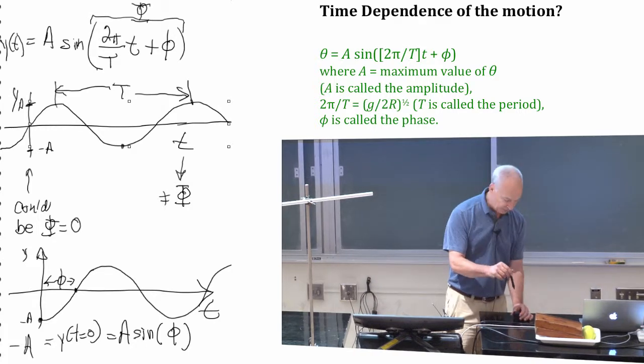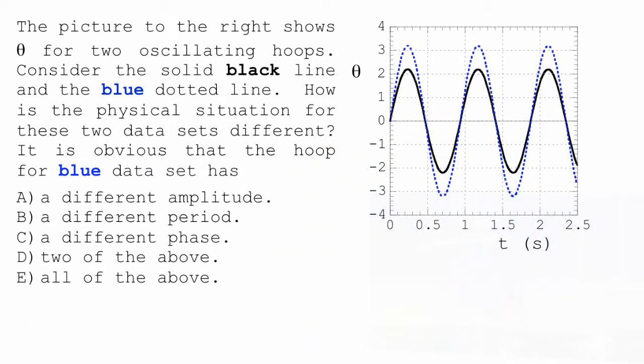So I have some questions for you. Picture to the right shows theta for two oscillating hoops. Consider the solid black line and the blue dotted line. How is this physical situation for these two data sets different? It's obvious that the hoop for the blue data set has. So I've asked questions like this before. I want to go back and remind you. When I say obvious, I mean if you calculate an amplitude or a period, and it looks like it's probably about the same for those two things, then it is exactly the same.